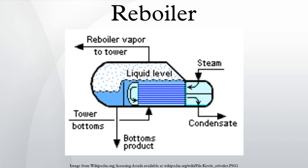Proper reboiler operation is vital to effective distillation. In a typical classical distillation column, all the vapor driving the separation comes from the reboiler. The reboiler receives a liquid stream from the column bottom and may partially or completely vaporize that stream. Steam usually provides the heat required for the vaporization.